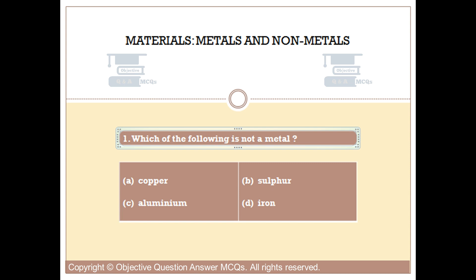Question number one. Which of the following is not a metal? Option A: Copper. Option B: Sulfur. Option C: Aluminium. Option D: Iron.